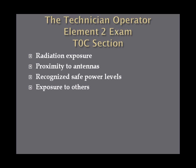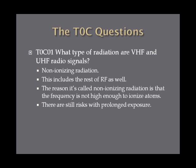The T0C section of questions deals with radiation exposure, proximity to antennas, recognized safety power levels, and exposure to others. What type of radiation are VHF and UHF radio signals? UHF and VHF radio signals are non-ionizing radiation. This includes the rest of RF as well, and it's called non-ionizing because the frequency is not high enough to ionize atoms — it's not shooting off protons from molecules. There are still risks with prolonged exposure, but non-ionizing radiation is the answer for VHF and UHF radio signals.